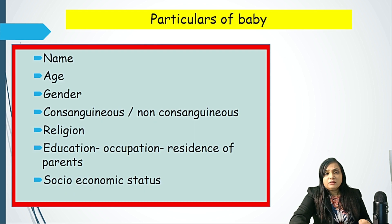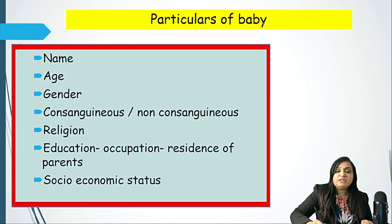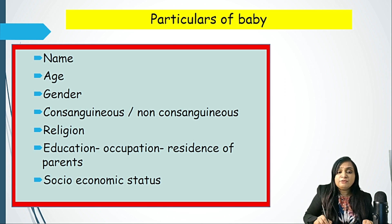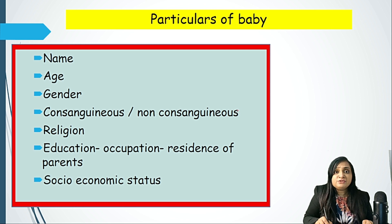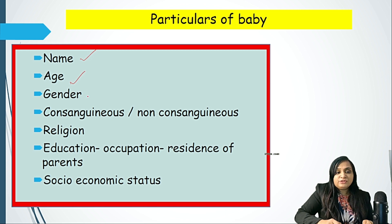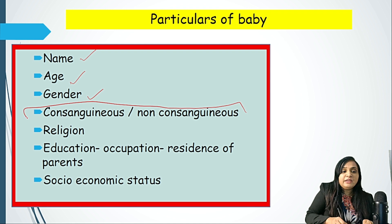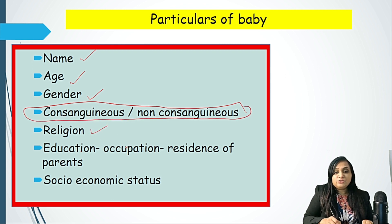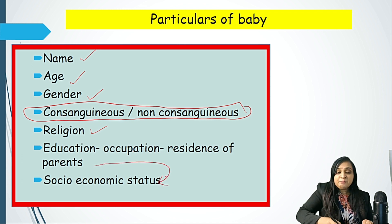What are the particulars of the baby? While the general format remains the same as for any patient, a few important points specific to the newborn must be covered: name of the child, age of the child, gender, consanguineous or non-consanguineous marriage — this is particularly relevant to paediatric history — as well as religion, education, occupation, and residence of the parents to determine socioeconomic class.